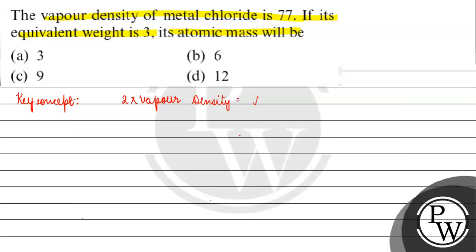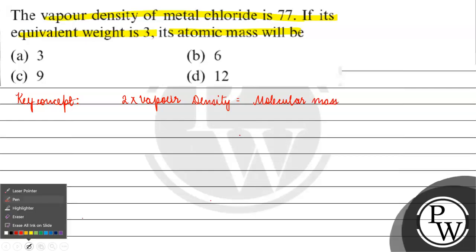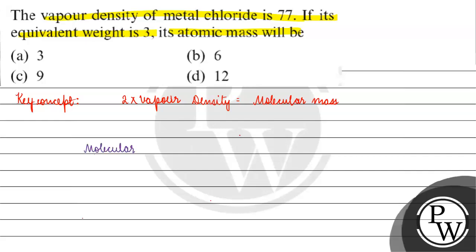Molecular mass of metal chloride is basically equals to 2 into 77, which is 154 gram per mole. This is about molecular mass.